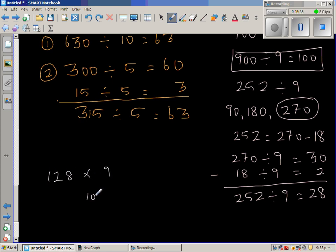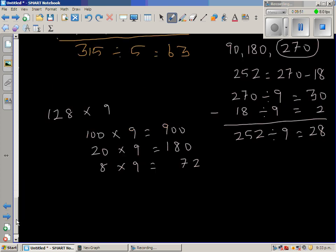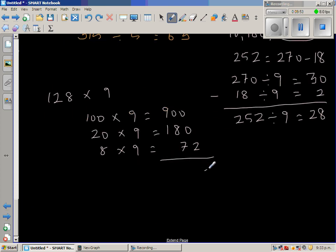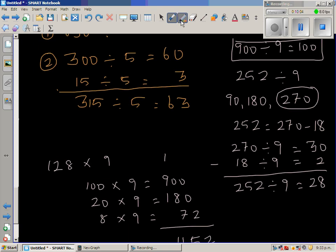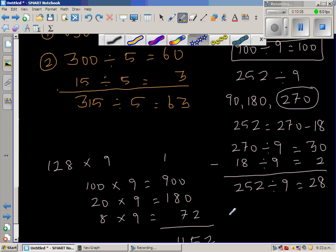So first I'll go 100 times 9 is 900. Then 2 stands for 20, so 20 times 9 is 180. And then you go 8 times 9 is 72. So let me add them up. So this is 2, 8 plus 7 is 15, remainder 1. So 1, 1, 5, 2. So that was what you started with. So your answer is perfectly right.